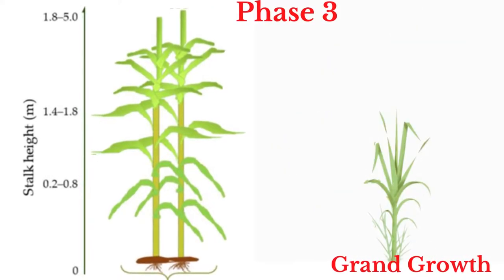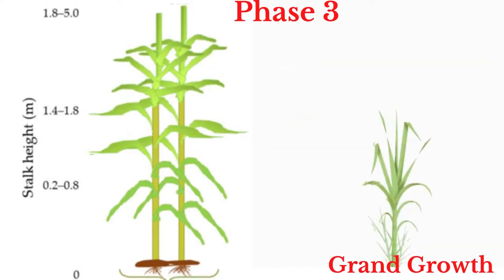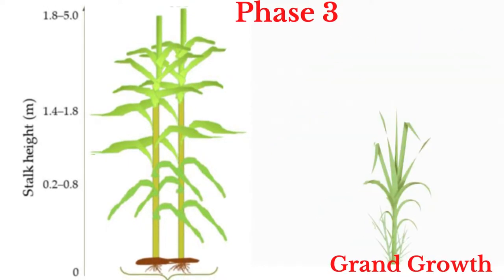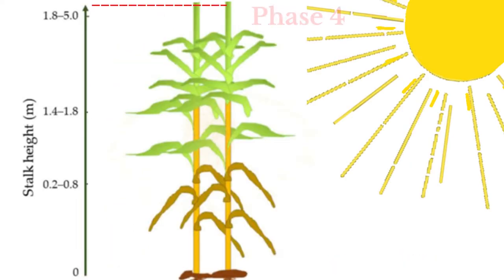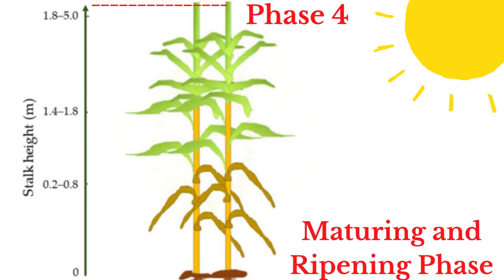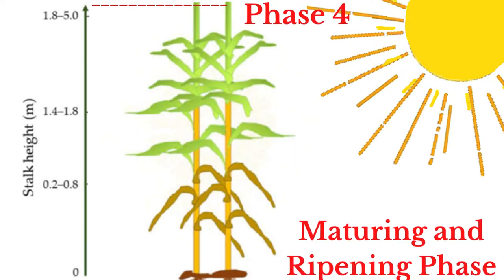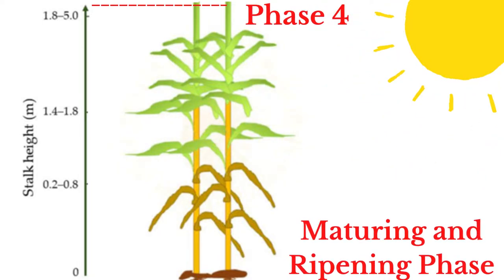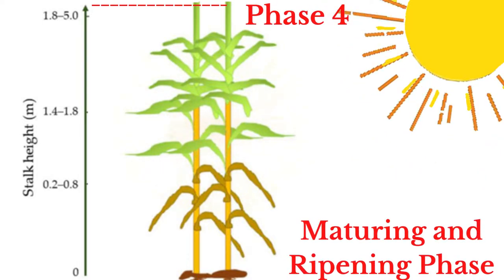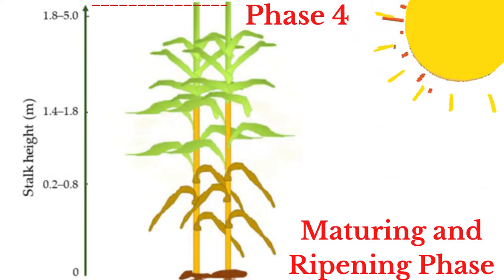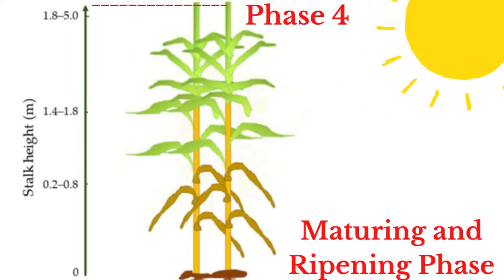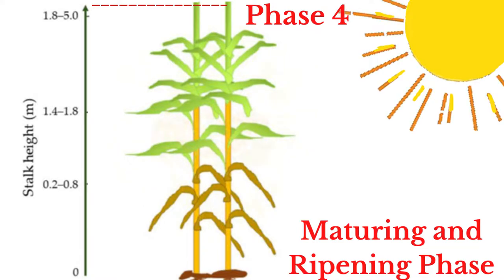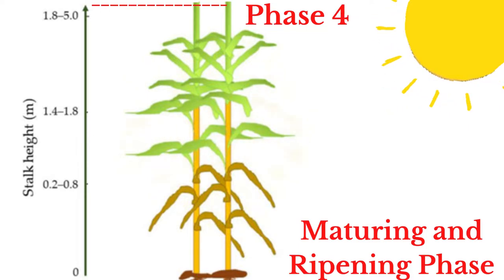The third phase is the grand growth phase, which involves the elongation of the sugarcane. This occurs 20 to 38 weeks after the cane is planted. The final phase is the ripening and maturing phase, where sugar synthesis takes place and simple sugar gets converted to sucrose. This occurs between 42 to 50 weeks after the sugarcane is planted.